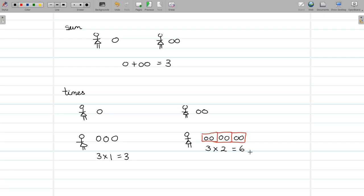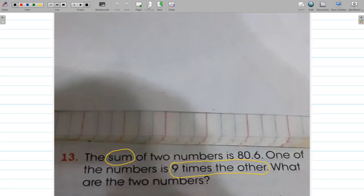Okay, so this is what the concept of times means. Now we're going back to apply it to the question. The question given is: the sum of two numbers is 80.6, one of these numbers is nine times the other. What are the two numbers?